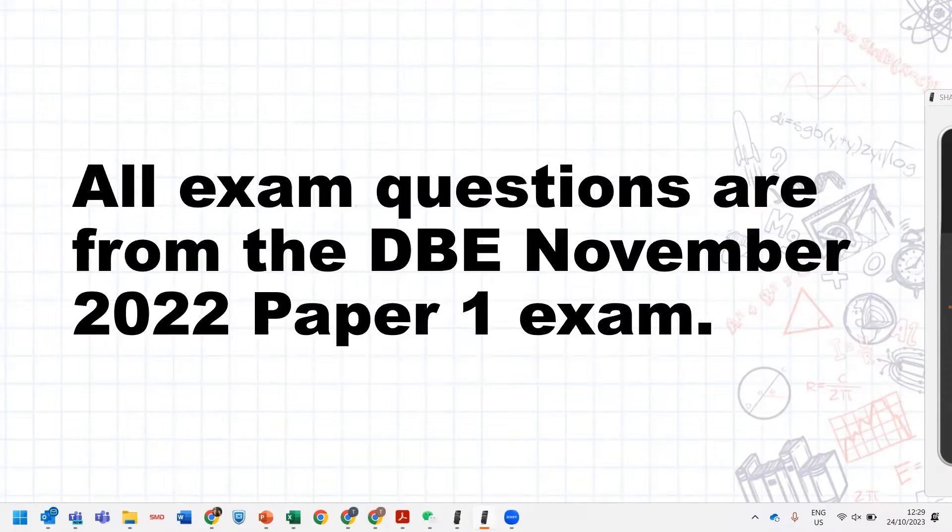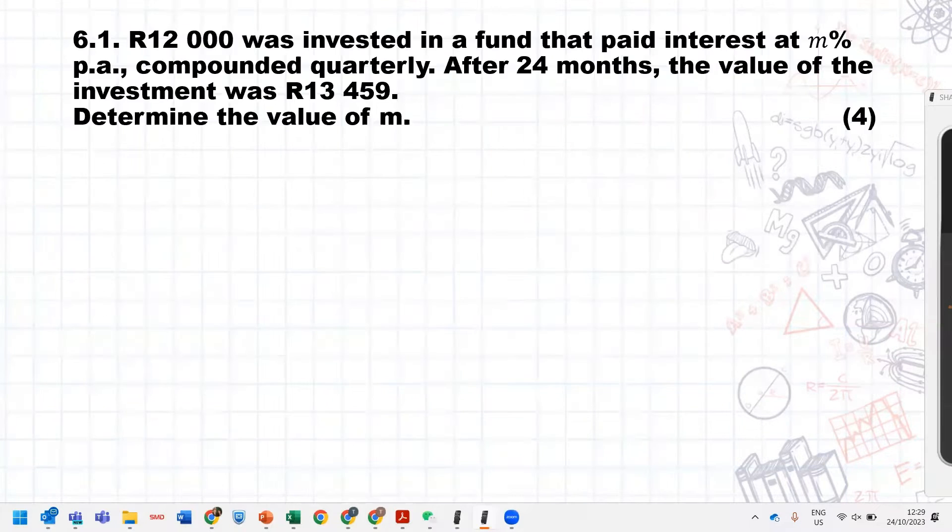The exam question I'm going to tackle today is from the Department of Education's November 2022 paper one exam. So the first question says R12,000 was invested in a fund that paid interest at M% per annum, compounded quarterly. So every quarter, so four times a year.